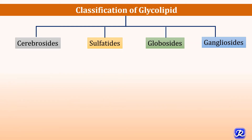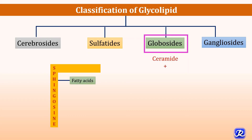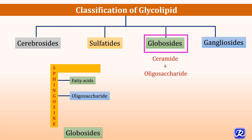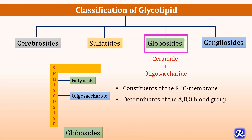The third type of glycolipid is globosides. It is made up of ceramide plus oligosaccharide, and it is an important constituent of red cell membrane. It also acts as a determinant of A, B, O blood groups.